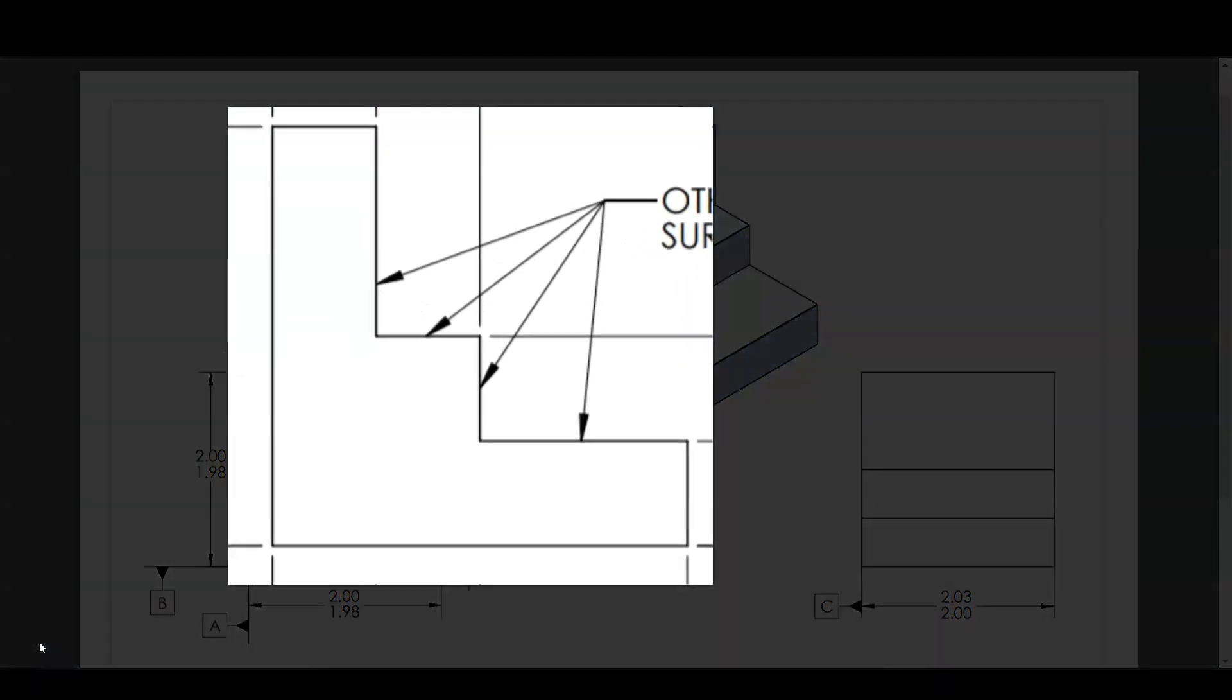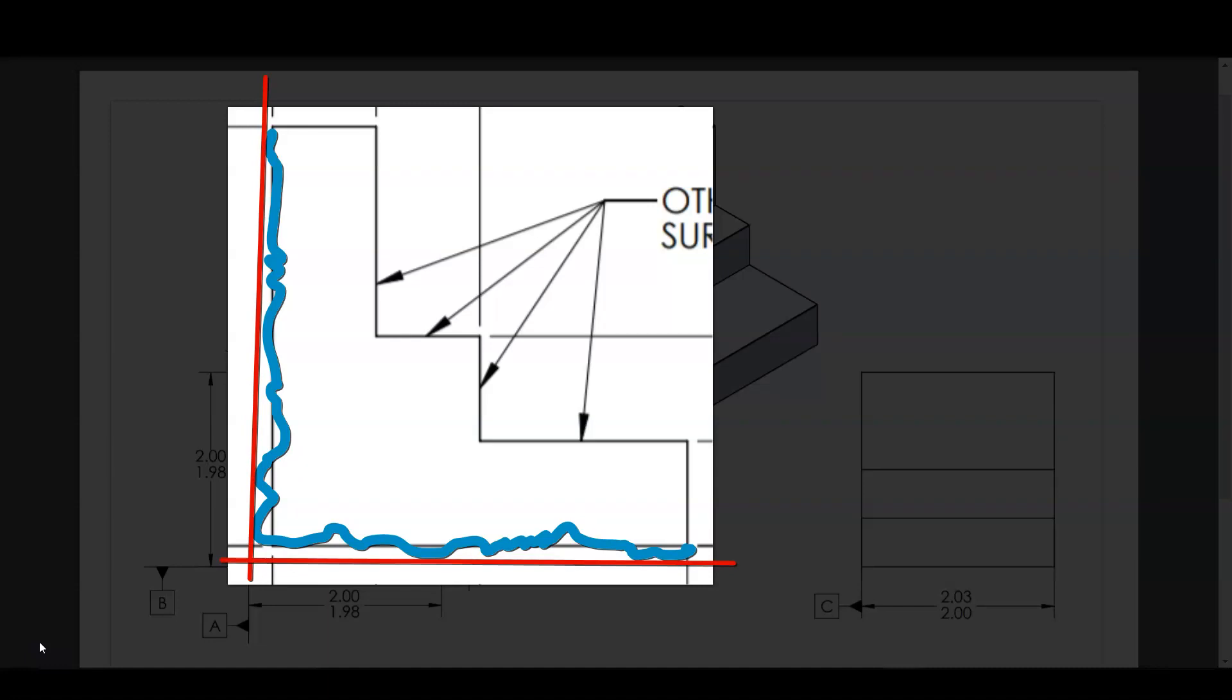If we were to put this part into assembly, we would see that the imperfect surfaces of datum feature A and datum feature B, they're contacting on their high points of those crucial surfaces. They're contacting on the high points.